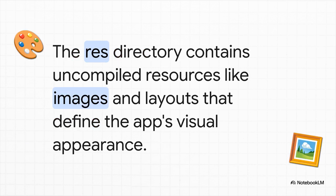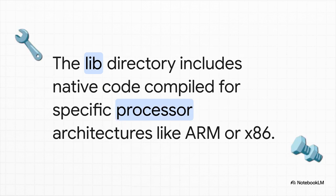But an app is way more than just code — it's got to look good. That's where the res directory comes in. This is where the app's entire visual identity is stored: the images, the icons, the layout files that create the entire user interface. And finally, we have the lib directory. Think of this folder as holding all the specialized engine parts — it contains code that's been specifically built for different types of phone processors, like ARM or x86, making sure the app runs as smoothly and efficiently as possible on your particular phone.